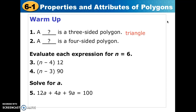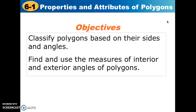Hopefully you were able to answer that a triangle is a three-sided polygon and a quadrilateral is a four-sided polygon. When you plug in 6 for n in the expression under number 3 you get 24, when you plug in 6 in number 4 you get 270, and for number 5 when you solve for a you get a is equal to 4. Our objectives for this lesson are to classify polygons based on their sides and angles and find and use the measures of interior and exterior angles of polygons.